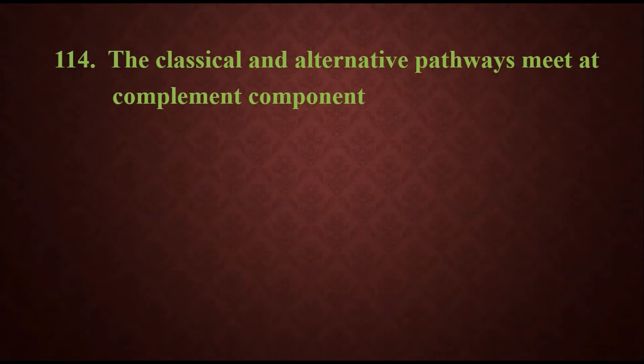Question 114: The classical and alternative pathways meet at a complement component. Options are complement 4, factor D, complement 5, or complement 3. The option will be C3, that is complement 3, which combines the classical and alternative pathways.